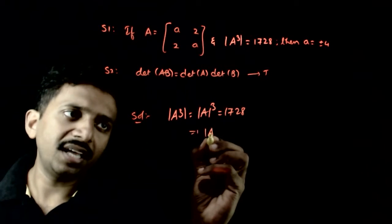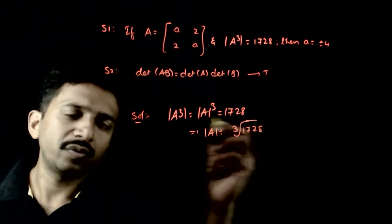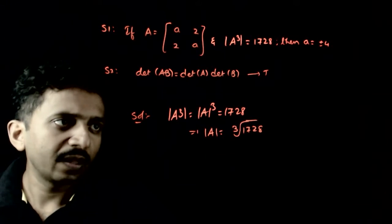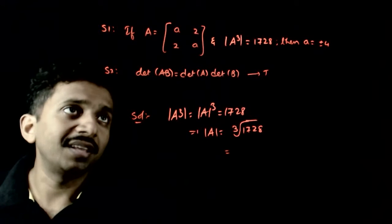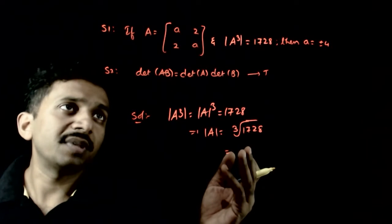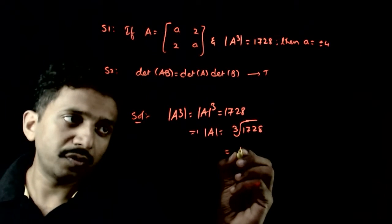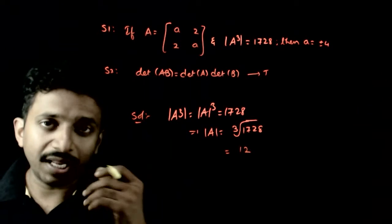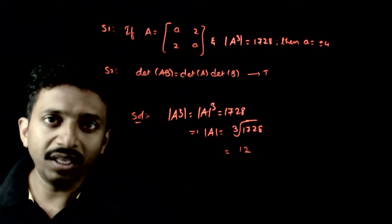det(A³) is nothing but (det A)³, which equals 1728. This implies det(A) equals the cube root of 1728, which is 12. We can verify: 10³ is 1000, 12³ is 1728.